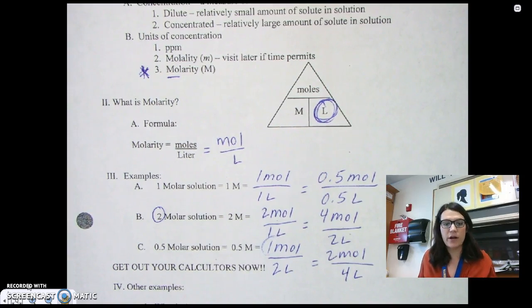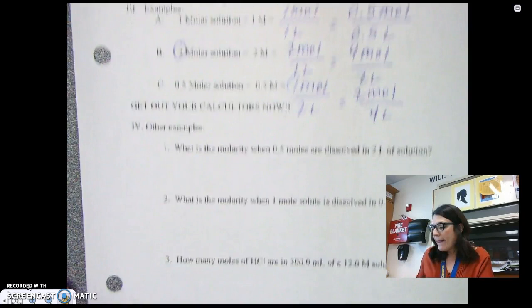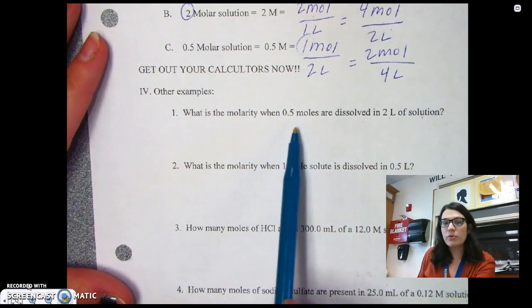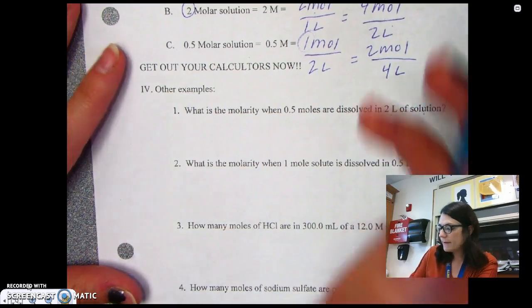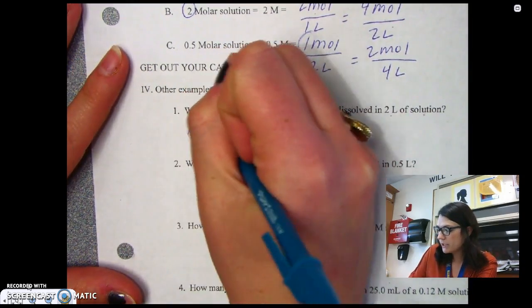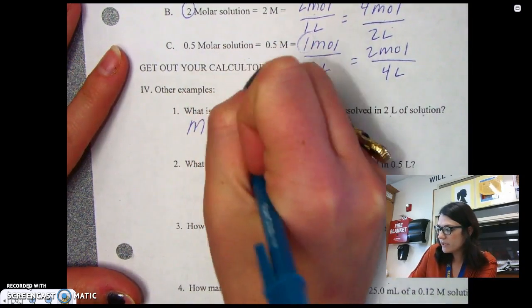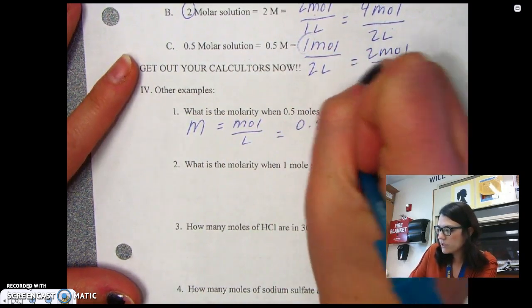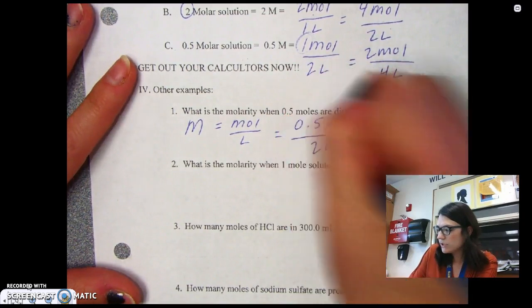Okay, so let's look at some examples here on how we do these calculations, and they're really simple. So for example, it says, what is the molarity when 0.5 moles are dissolved in two liters of solution? So I always write molarity is equal to moles divided by liters, which is going to be equal to 0.5 moles divided by two liters.